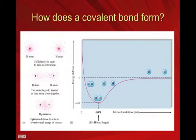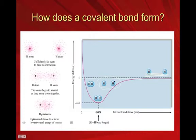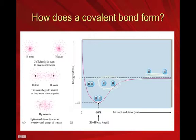First of all, how does a covalent bond form? You have to have the elements notice each other. When they're too far apart, they don't notice each other — this is the baseline energy of the unbonded atoms. We're bonding two hydrogen atoms here, but it could be any atom. As they get close enough to notice each other, there starts to be an increase in stability, or a decrease in energy between the two atoms.